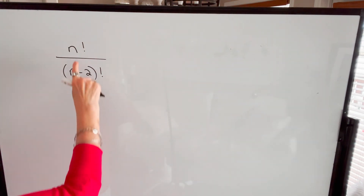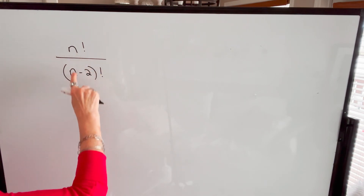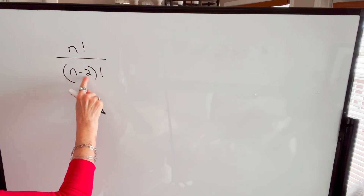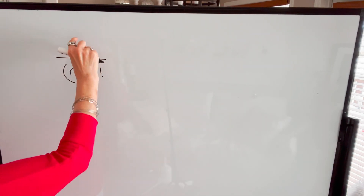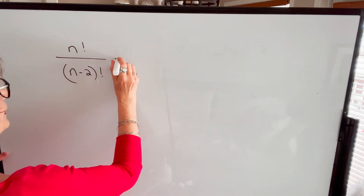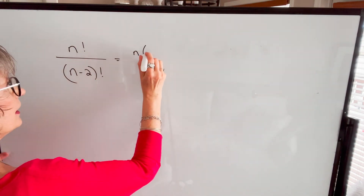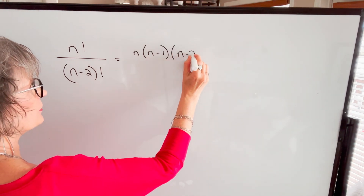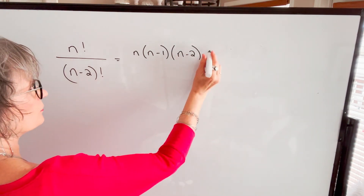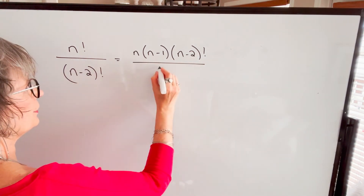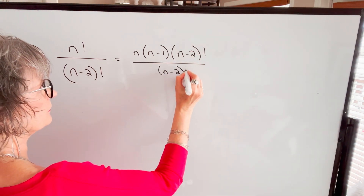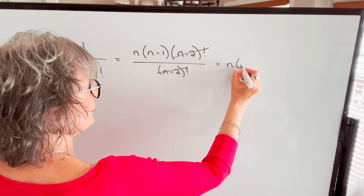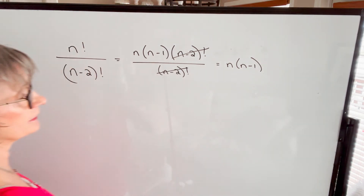In our next example, we have n factorial in the numerator and (n−2)! in the denominator. Since n! is the larger value, we break down the numerator: n times (n−1) times (n−2)!, which is the same as in the denominator. We cancel (n−2)!, and our result is n times (n−1).